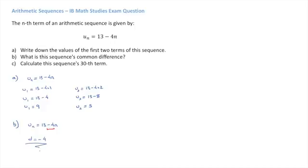Another way we could have shown this is by using the fact that the common difference, d, equals u2 - u1. That's equal to 5 - 9, which is equal to -4.